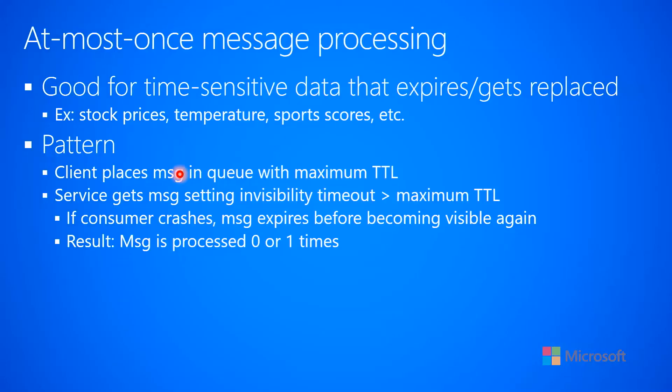The last thing I want to say about queue processing is that sometimes you want at-most-once message processing, where the message is processed either zero times or at most one time, but not repeatedly. This can be useful for time-sensitive data that expires or gets replaced quickly — examples would be a stock price, temperature, or a sports score during a game. That information expires fast and gets replaced with something else.